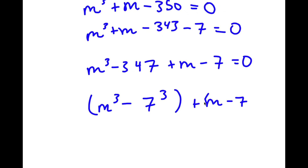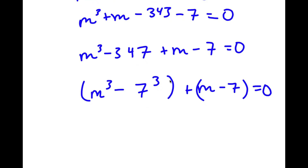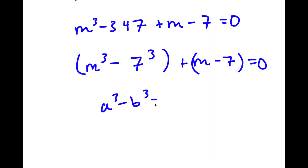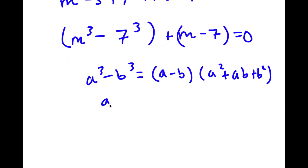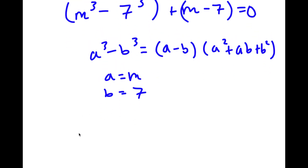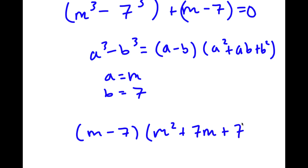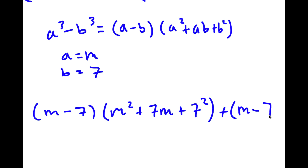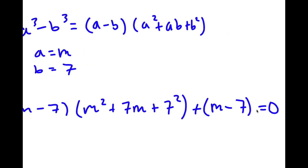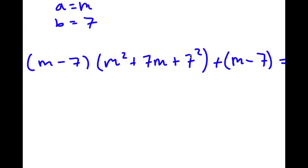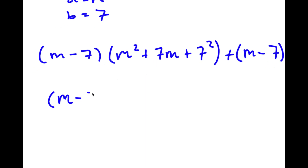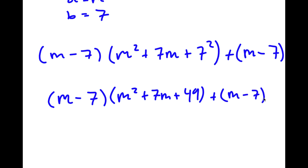I have this plus m minus 7. If I have something in the form a to the power of 3 minus b to the power of 3, this is the same thing as a minus b times a squared plus ab plus b squared. In this case a is m and b is 7. So I have m minus 7 times m squared plus 7m plus 7 squared, plus m minus 7, is equal to 0. And 7 squared is 49. So I have m minus 7 times m squared plus 7m plus 49, plus m minus 7, equals 0.